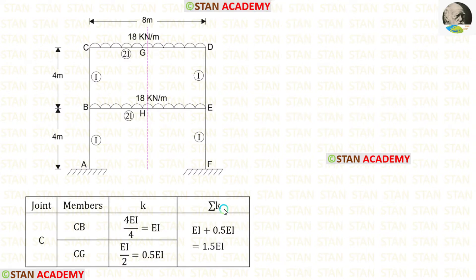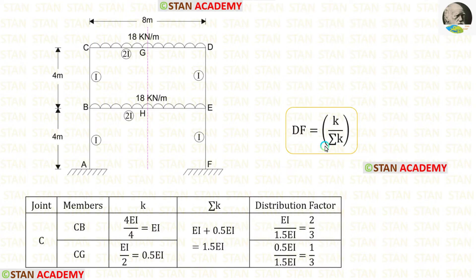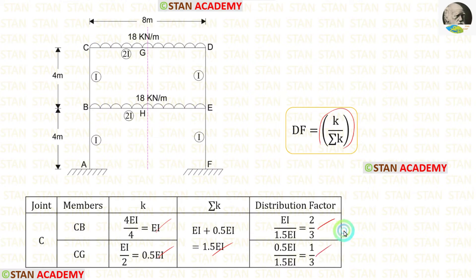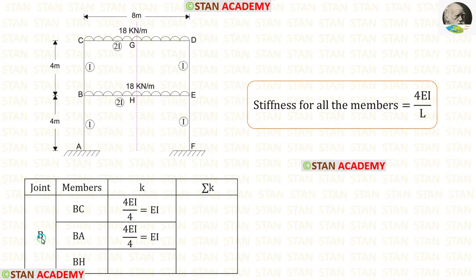Now let us find sigma k by adding the stiffness values of CB and CG. After adding, we get 1.5EI. Now let us find the distribution factors using the formula k divided by sigma k. We have calculated the values of k and sigma k, and using the formula we can find the distribution factors.